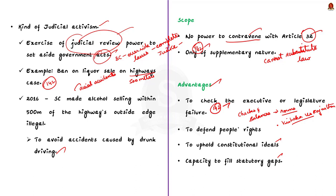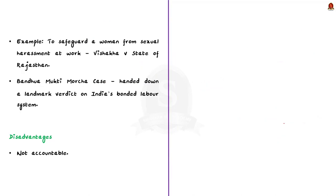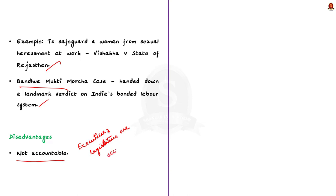But Article 142 has some disadvantages as well. Firstly, the Supreme Court's power under Article 142 is not accountable — the executive and legislature are always accountable to their actions, but the power of the Supreme Court under Article 142 is not accountable to the people. Then, the majority of petitions or appeals brought before the Supreme Court are frequently rejected, and the Supreme Court is not required to explain why petitions are rejected. Also, public faith in the government's integrity, quality, and efficiency can be eroded by frequent court interference.